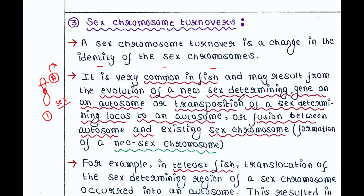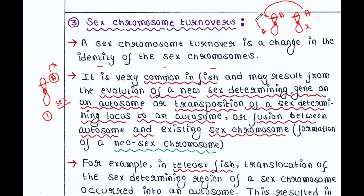Another way is transposition of a sex-determining locus to an autosome. Suppose a gene A present on the X chromosome jumps to an autosome through transposition — the capability of a gene to move from one place to another. The autosome that now carries gene A then becomes a sex chromosome.